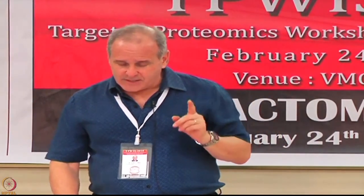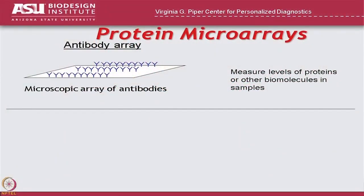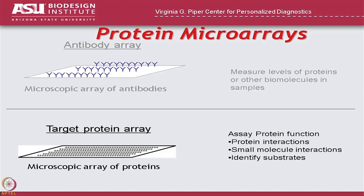That's what led us to the idea of protein microarrays. There are two kinds of protein arrays. The first kind are antibody arrays, where you print an array on a microscope slide, put down antibodies that recognize different proteins, and then use those arrays to probe a sample — to capture whatever proteins are in that sample as a way of measuring the levels of those proteins.